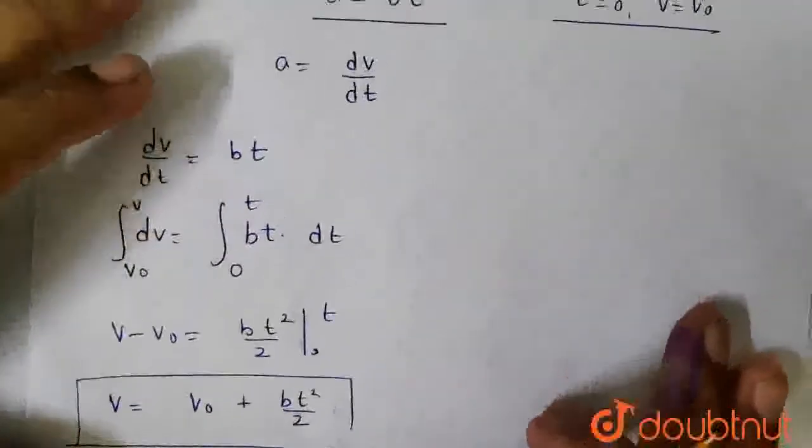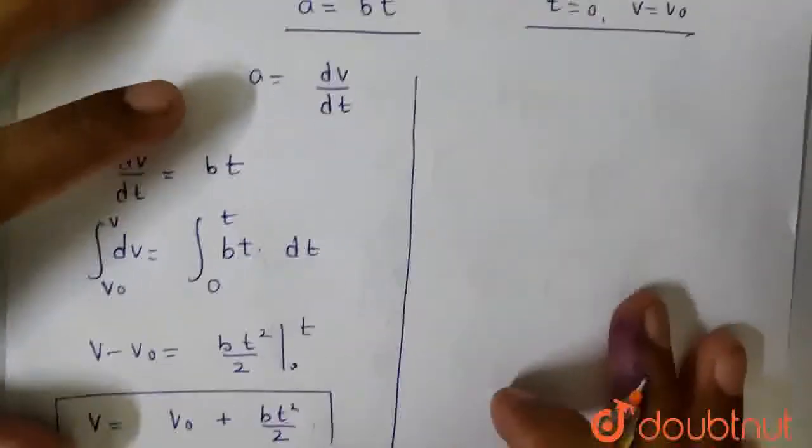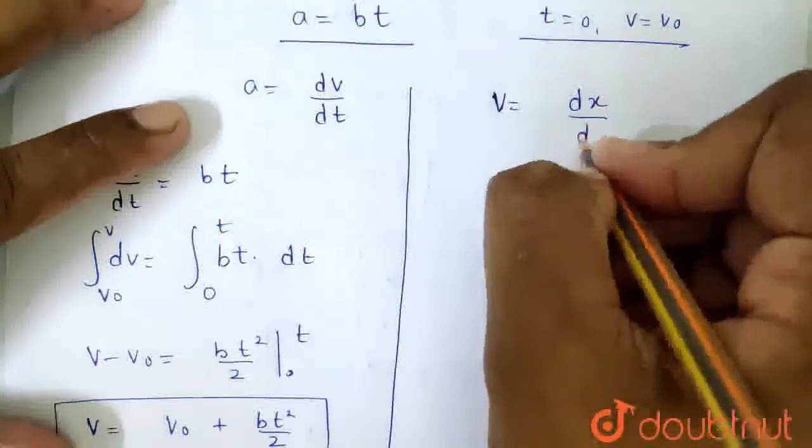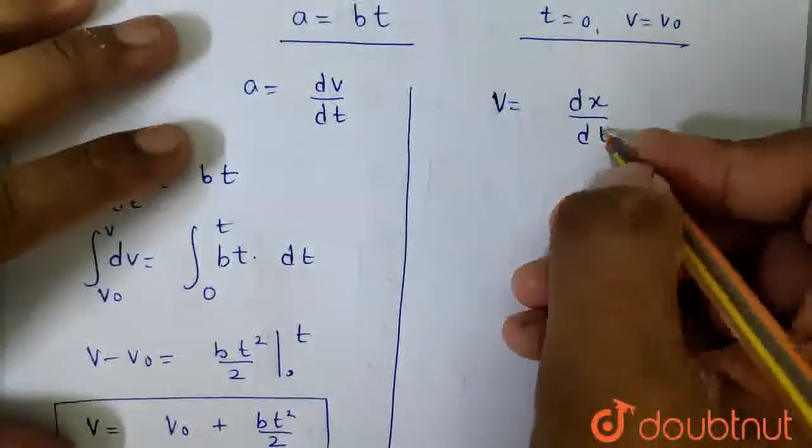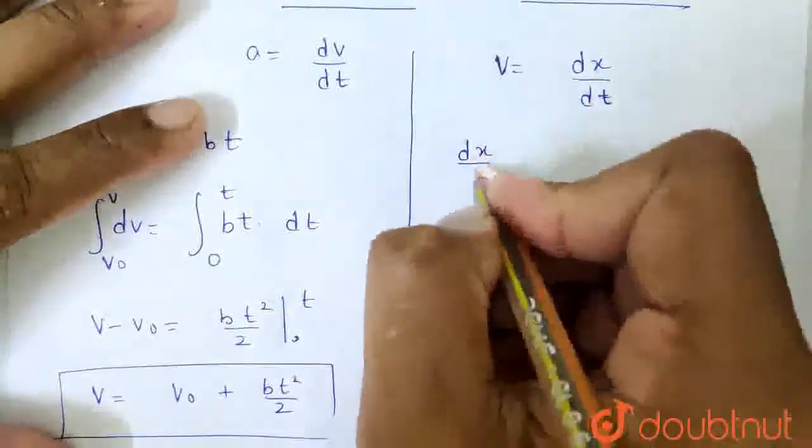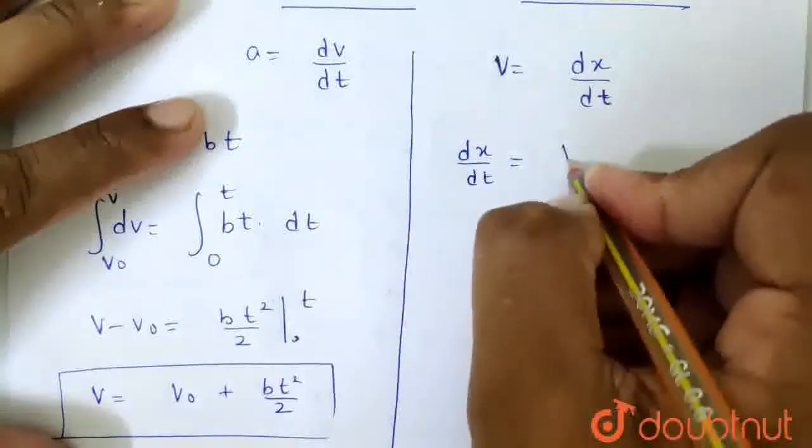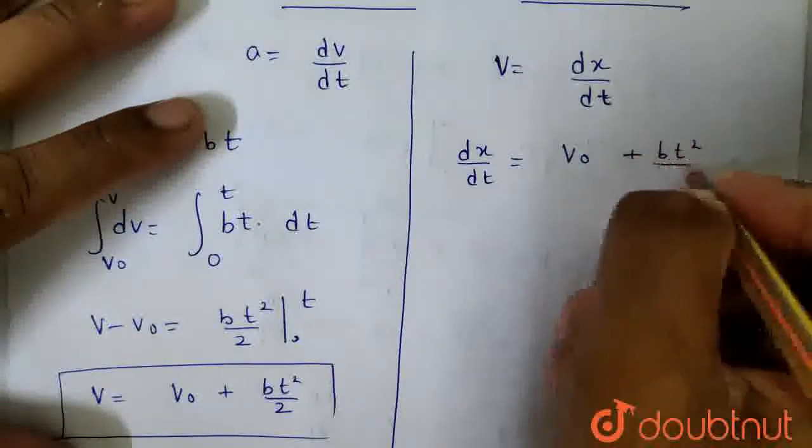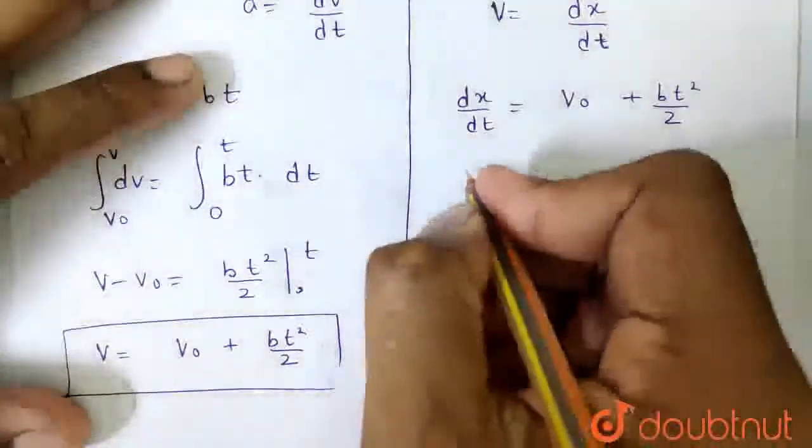We know one more thing: that velocity is dx by dt, where x is displacement or distance. So here I can write dx by dt is equal to v0 plus bt square by 2. So now dx will be how much?